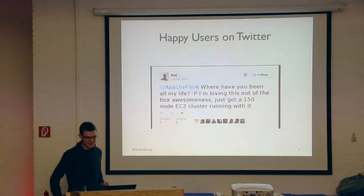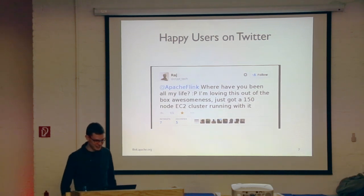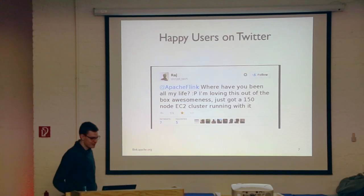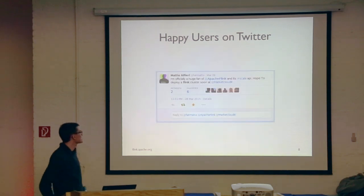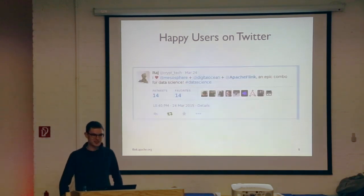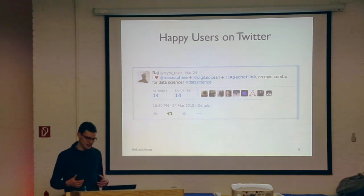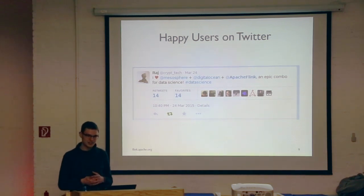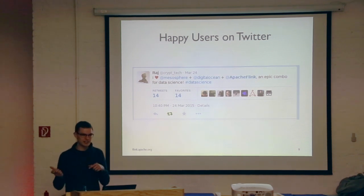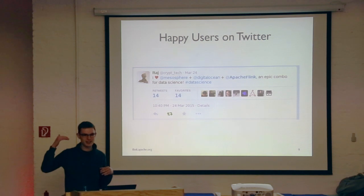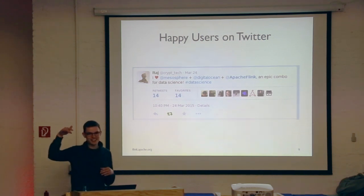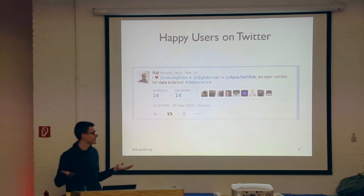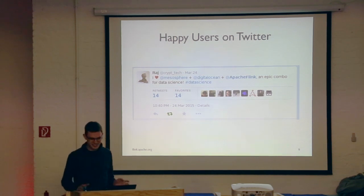We have happy users on Twitter who have been waiting for Apache Flink all their life, and now they have it. One user is excited about the Scala API. Another user has a very interesting setup — launching Apache Flink on Mesos by running it through Myriad, which is an abstraction layer on top of Mesos to run YARN on it. It's like five layers until he actually runs Flink, but it works.